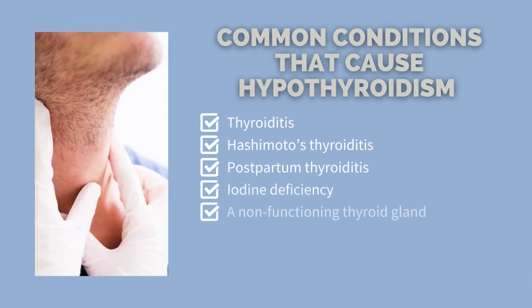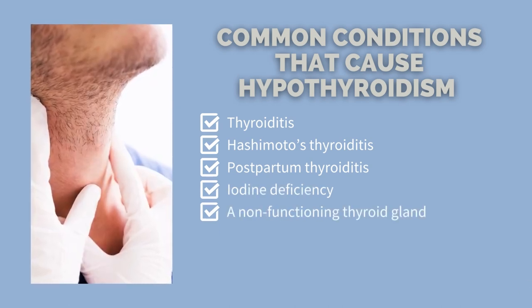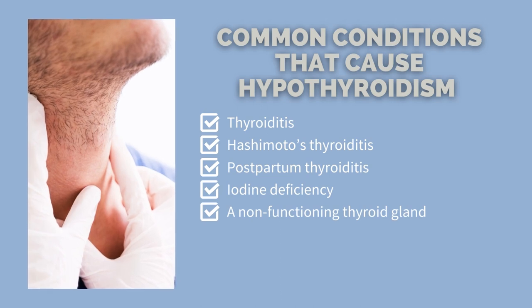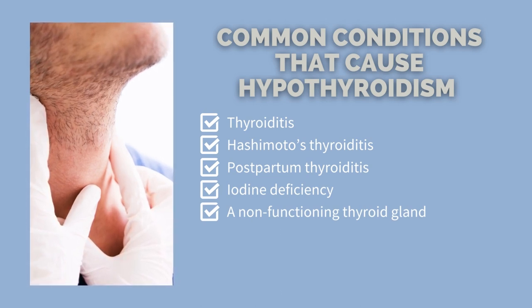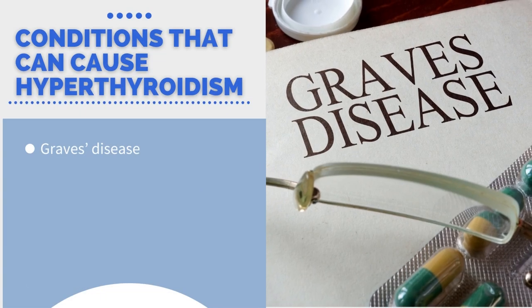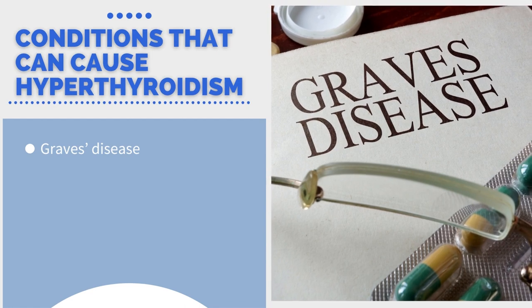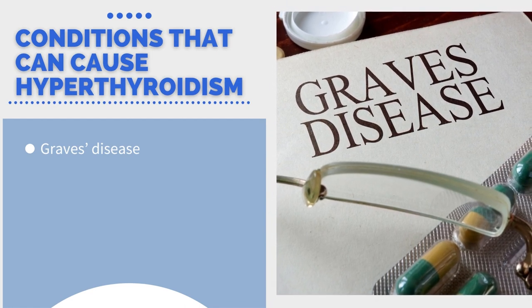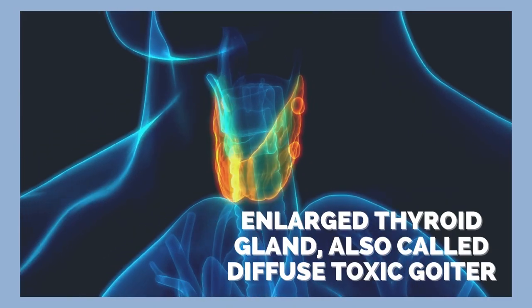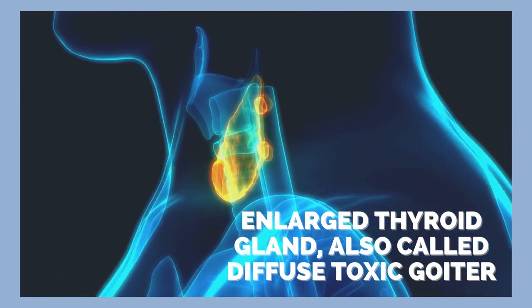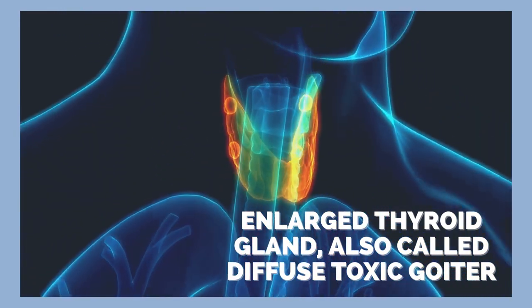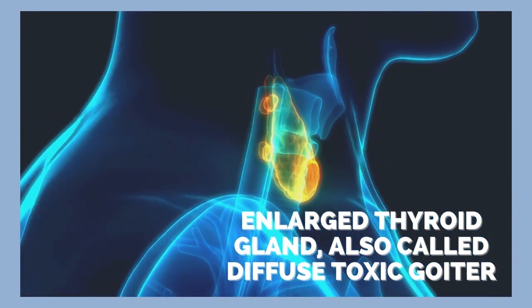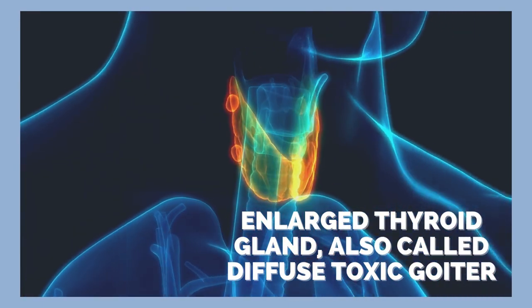A non-functioning thyroid gland is another cause — for some people the thyroid gland doesn't work properly from birth, and if left untreated, the child could have both physical and mental issues in the future. Conditions that can cause hyperthyroidism include Graves' disease, where the entire thyroid gland may be overactive and produce too much hormone. Its identifying characteristic is an enlarged thyroid gland, also called diffuse toxic goiter.